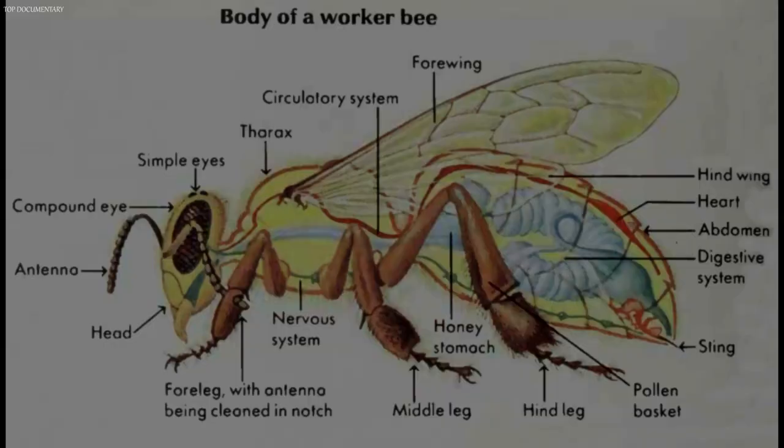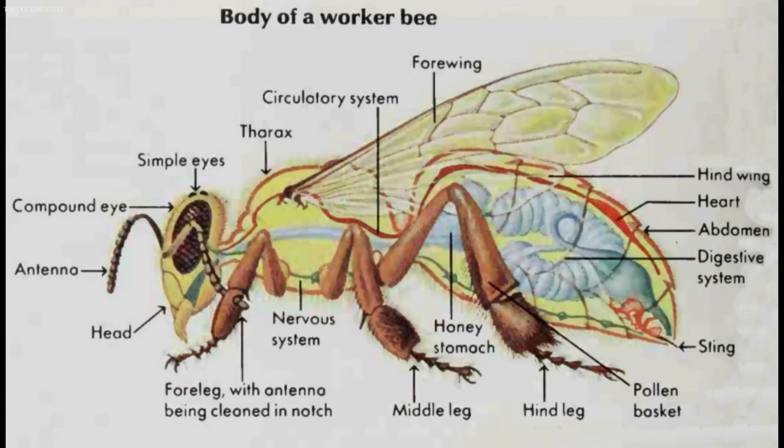The honey bee, like all insects, has a body that is divided into three sections: the head, the thorax or chest, and the abdomen. The insect's honey stomach, in which it carries nectar, is located in the abdomen. The bee's body is thickly covered with fine structures called hairs.